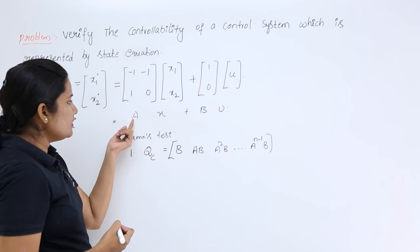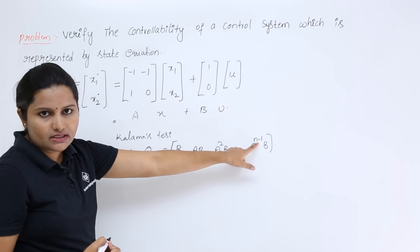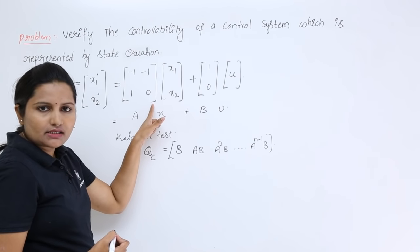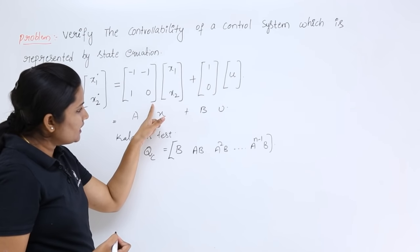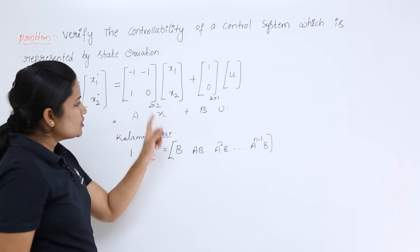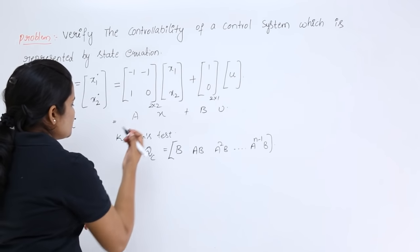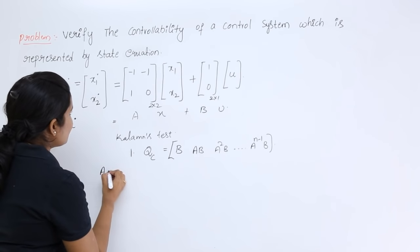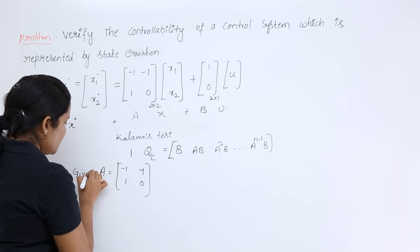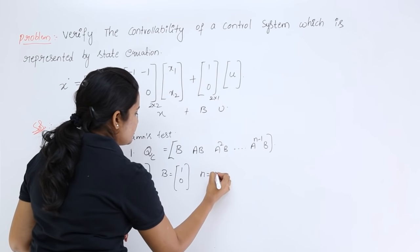Here, A and B are the system matrices and N represents the order of matrix A. A is always an N×N matrix. For the given data, A is a 2×2 matrix and B is a 2×1 matrix, so N = 2. Therefore, A = [-1,-1; 1,0], B = [1; 0], and N = 2.